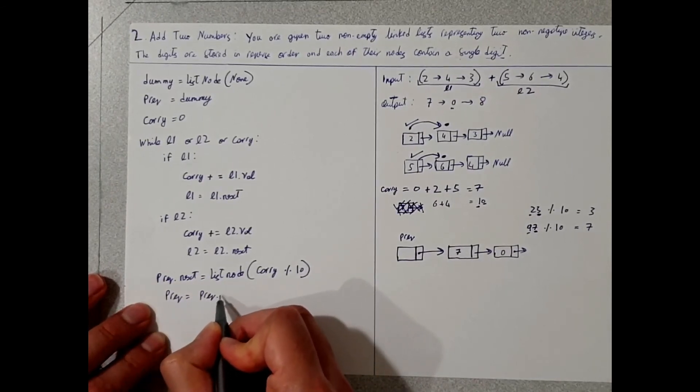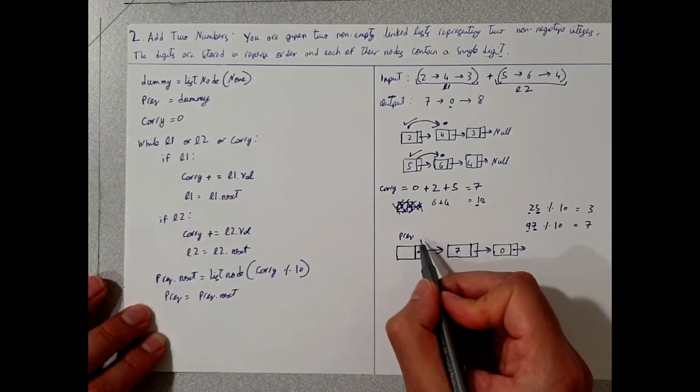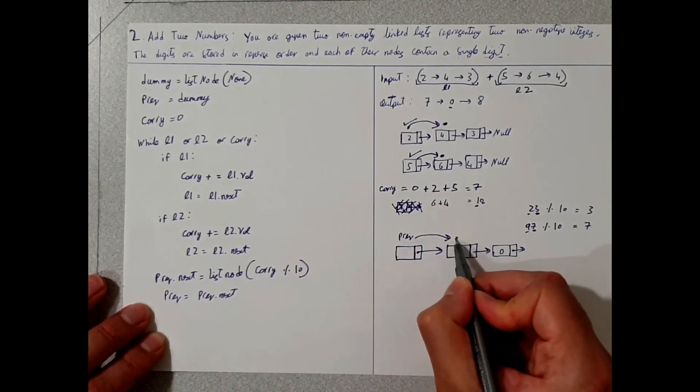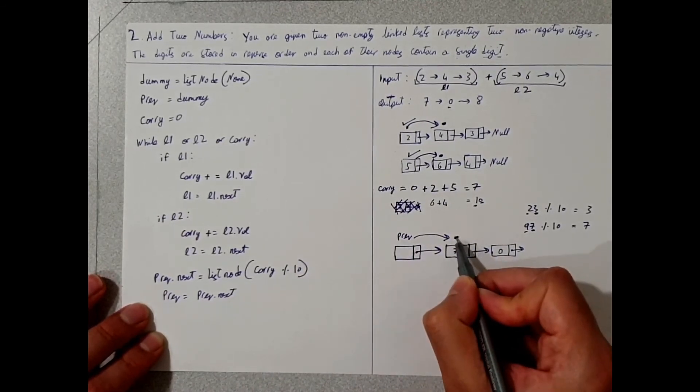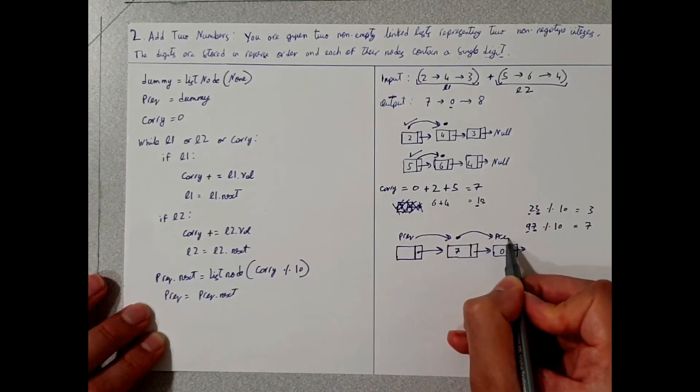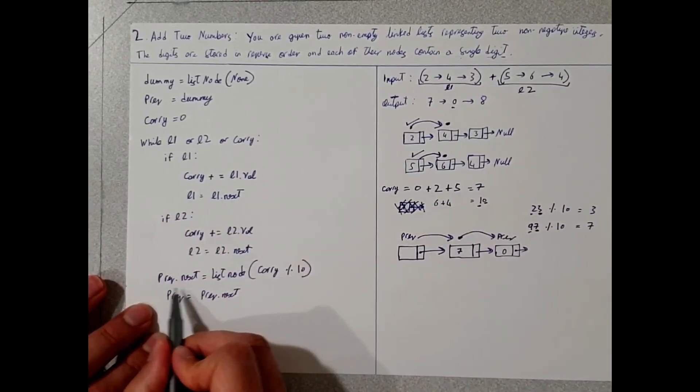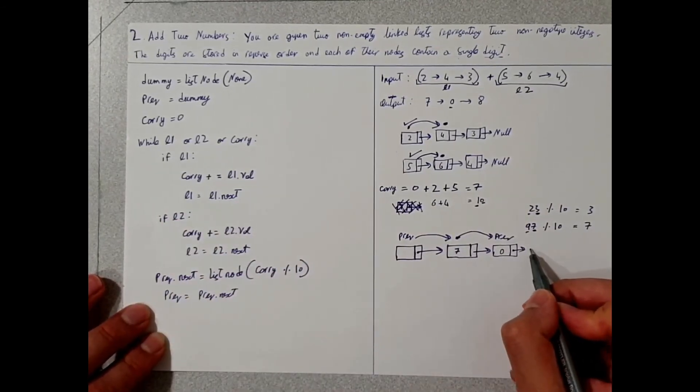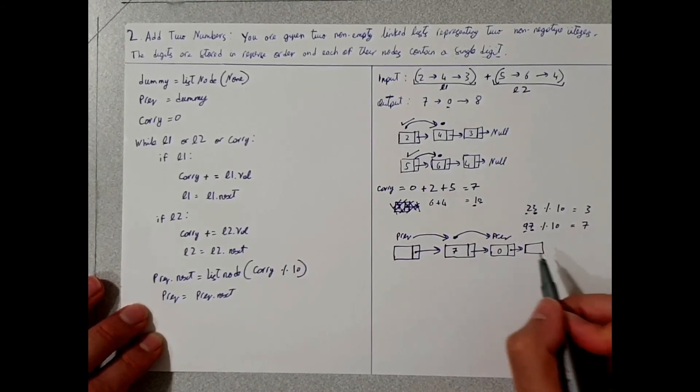But before we jump into that, we're just going to say the new prev will be prev.next. You want to just move the prev pointer to the next one here. And in this case, we already did one more, so you want to move previous here so that when you come back to this loop, prev.next will be pointing at a new list node.